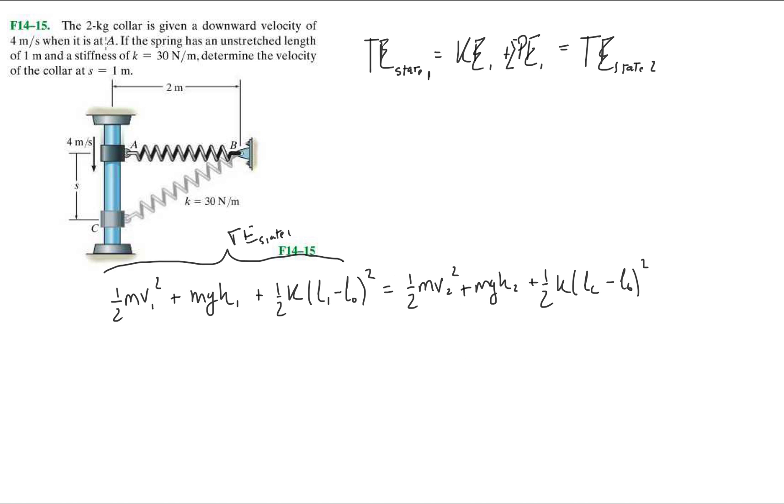All of this has to equal my kinetic energy at point C plus your potential energy at point C plus your spring potential energy at point C, or state 2. Let's read the problem here. The 2-kilogram collar is given a downward velocity of 4 meters per second when it is at A. So we're given the kinetic energy, our initial kinetic energy. When it is at A, if the spring has an unstretched length of 1 meter, so this is my 0 potential. That's where your Y is equal to 0. That way, you know your potential at that point is going to be 0.